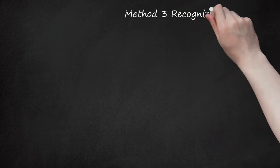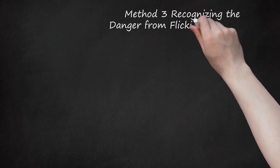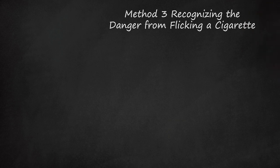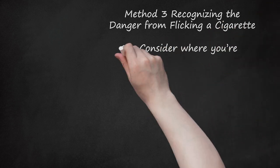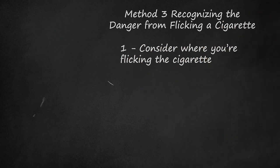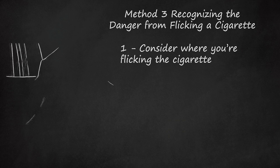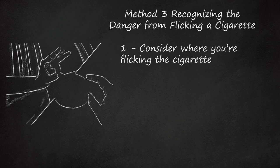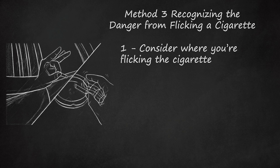Method 3: Recognizing the Danger from Flicking a Cigarette. Step 1: Consider Where You're Flicking the Cigarette. It's one thing to flick a cigarette into an ashtray. It's quite another to flick it outside. Most people consider doing so littering. It can also be illegal and dangerous.